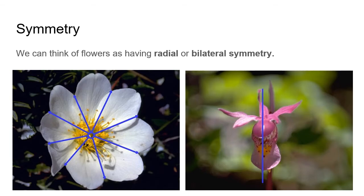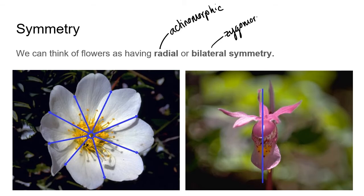For symmetry, we can think of flowers as having either radial or bilateral symmetry. You might also see these written as actinomorphic and zygomorphic respectively — they're interchangeable terms, but good to know if you encounter them in a key.